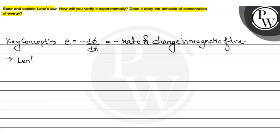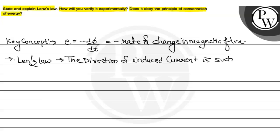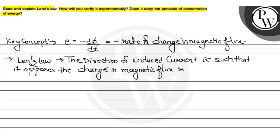So here is Lenz's Law. The polarity, or you can say the direction of induced current, is such that it opposes the change in magnetic flux which is responsible for its production. This is our Lenz's Law.